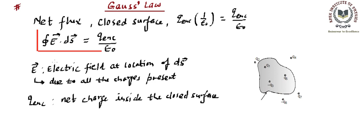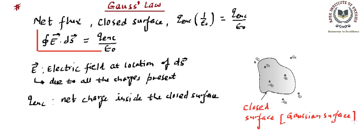This can be better understood with a figure. There are certain charge distributions — scattered charges: q1, q2, minus q3, q4, q5, q6, and q7. We have opted for this closed surface, where the boundary line indicates the Gaussian surface. A Gaussian surface is a closed surface — that we can remember.